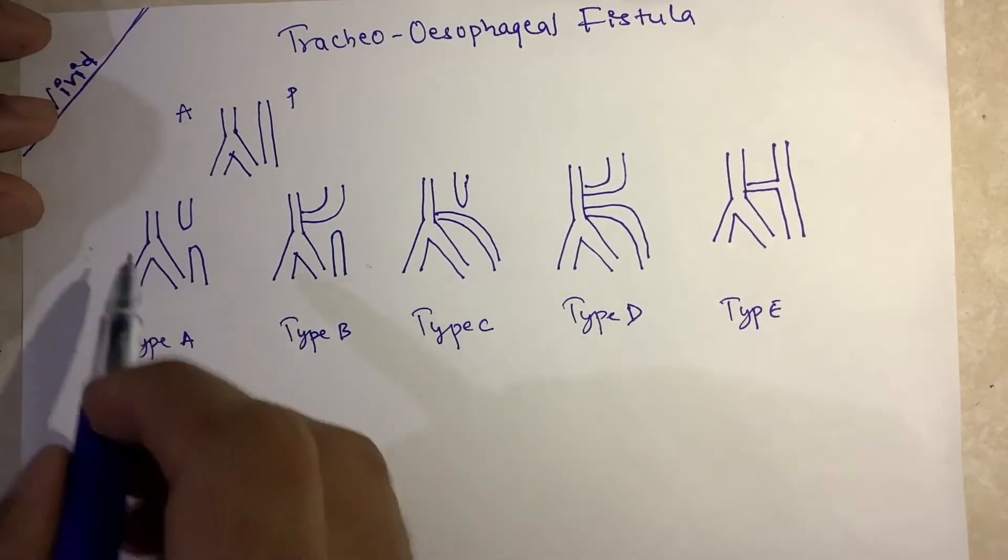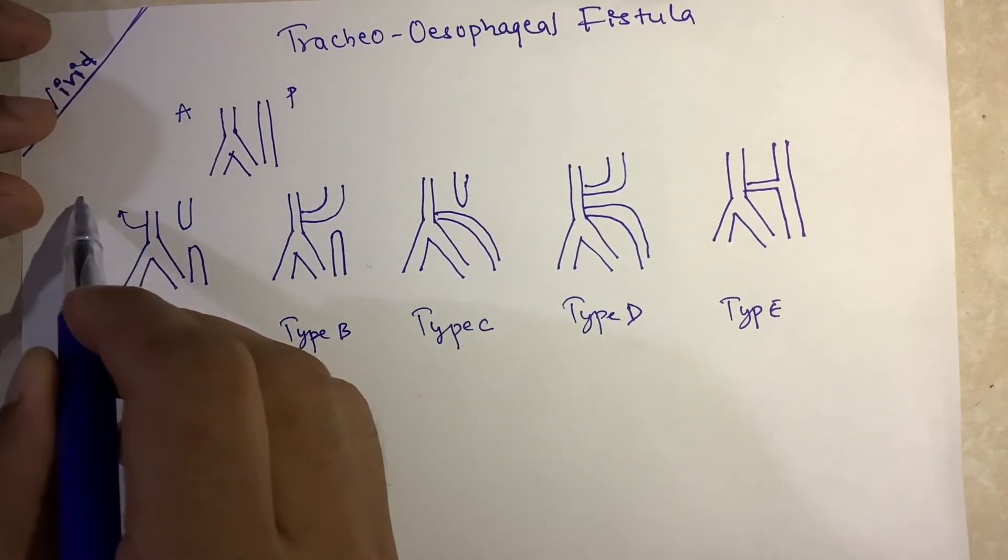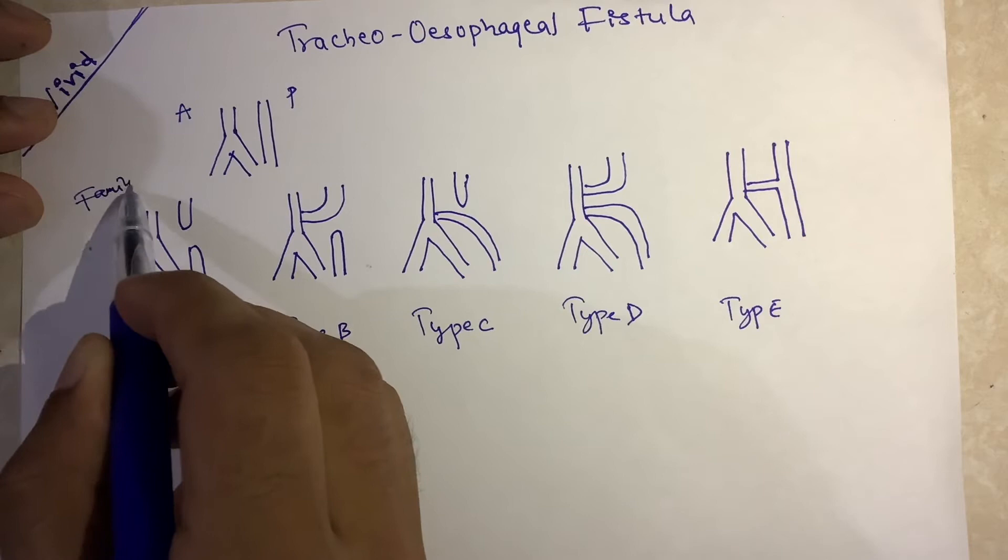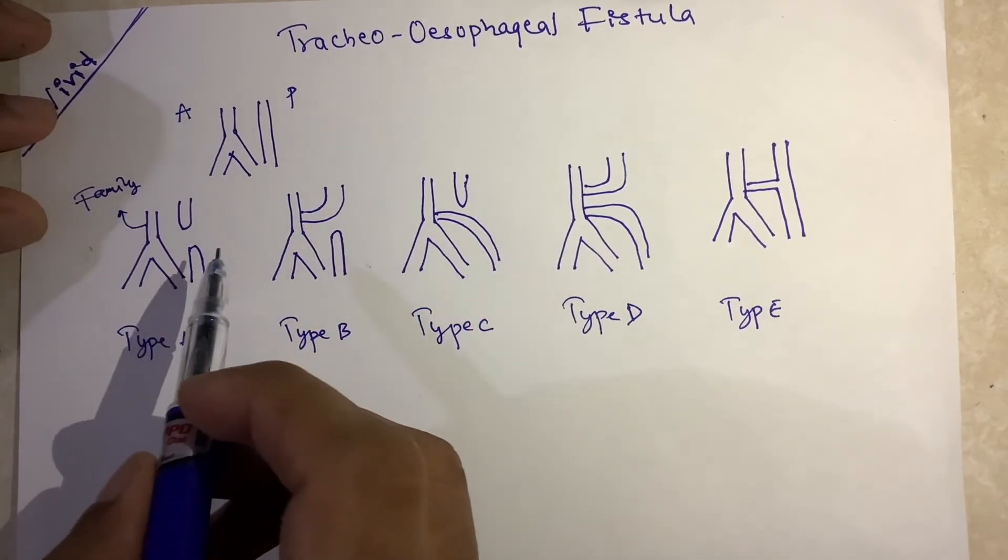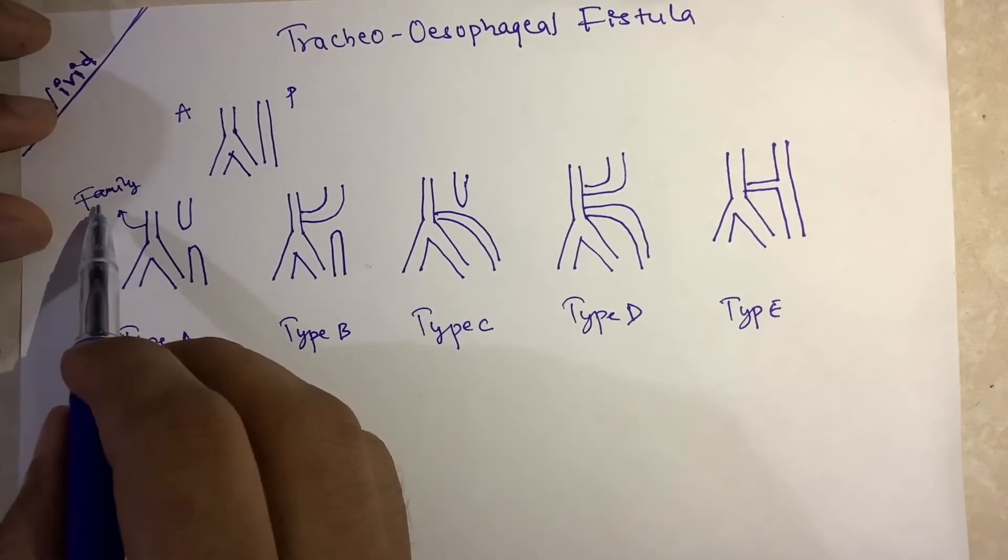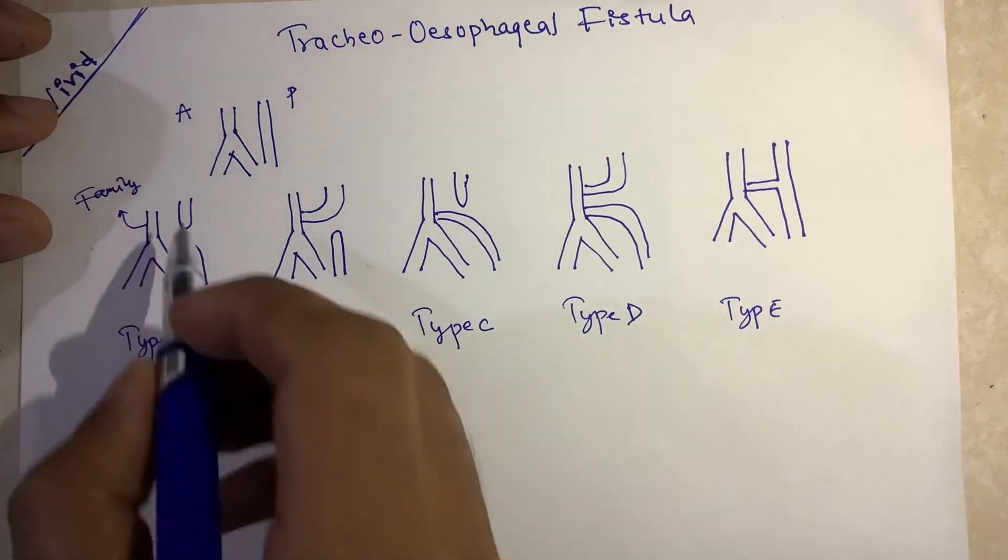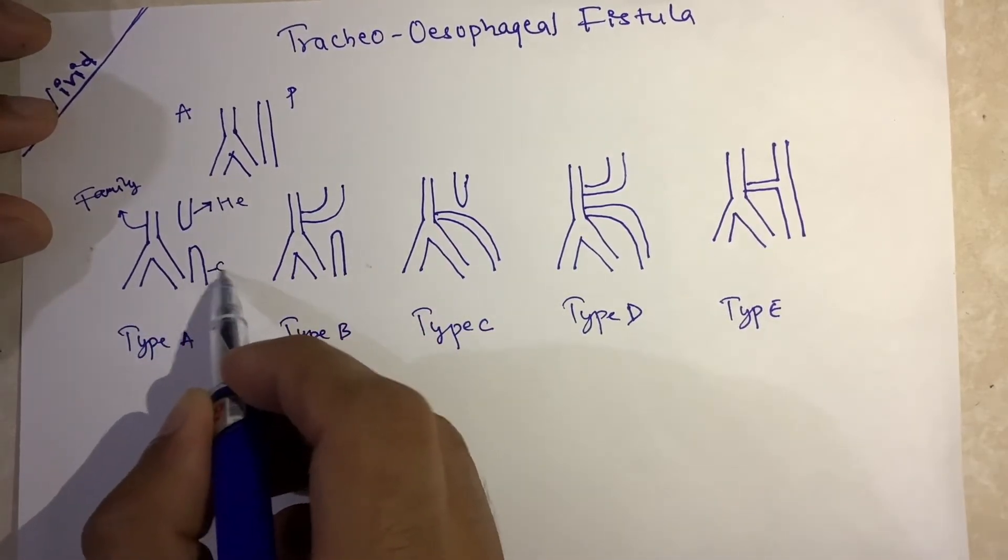So the story is, let us consider this trachea respiratory portion as a family. It is a real short story of boy and girl. Let us consider the trachea and respiratory as family, and the upper portion of the esophagus as he and the lower portion of the esophagus as she.